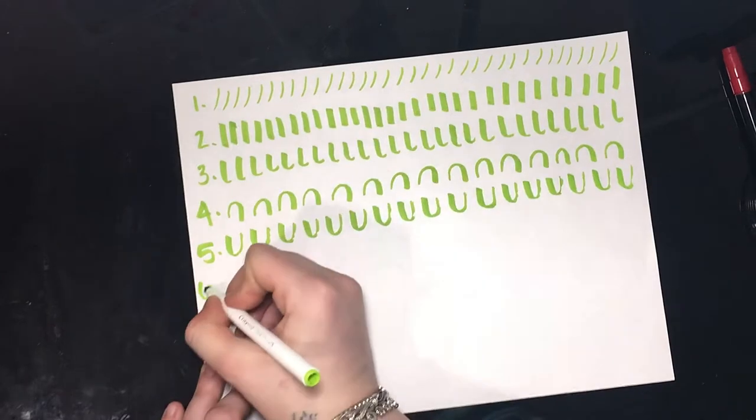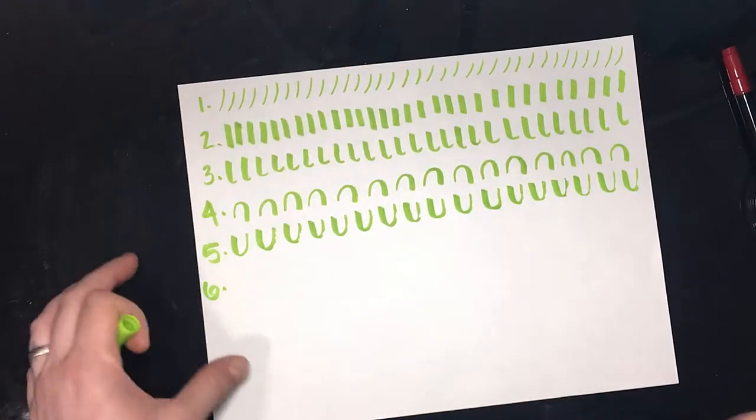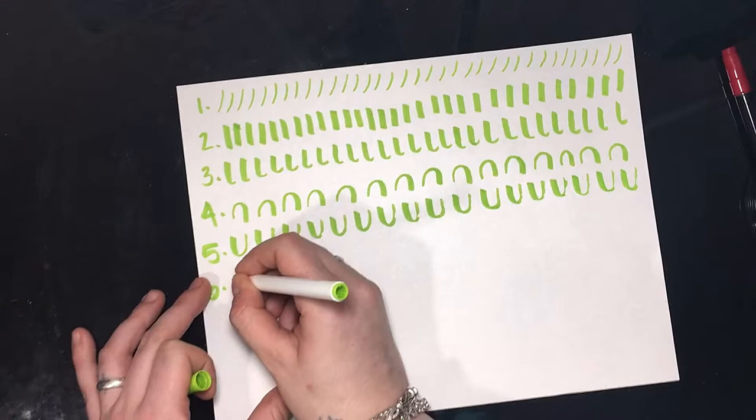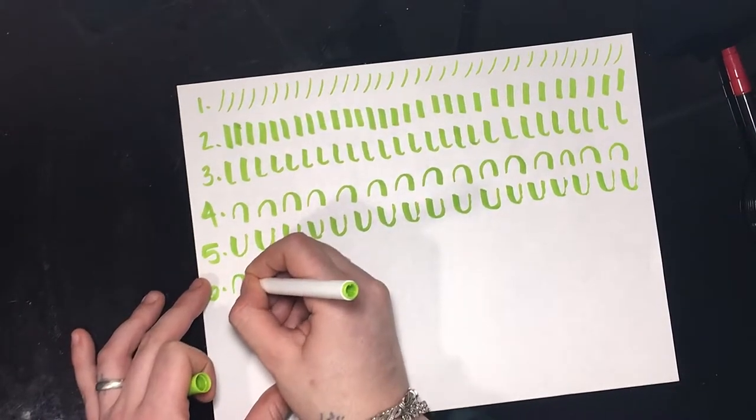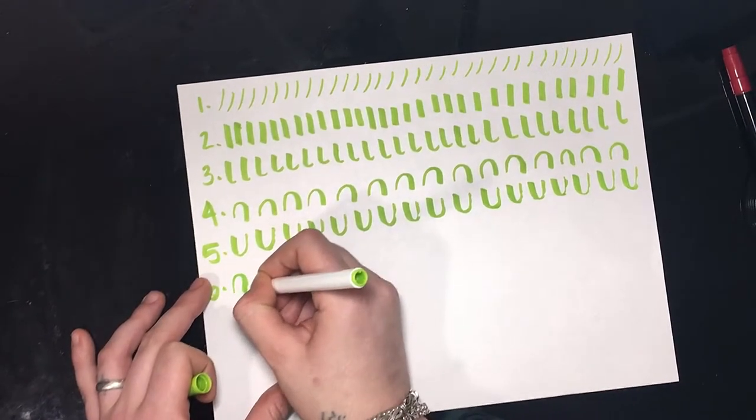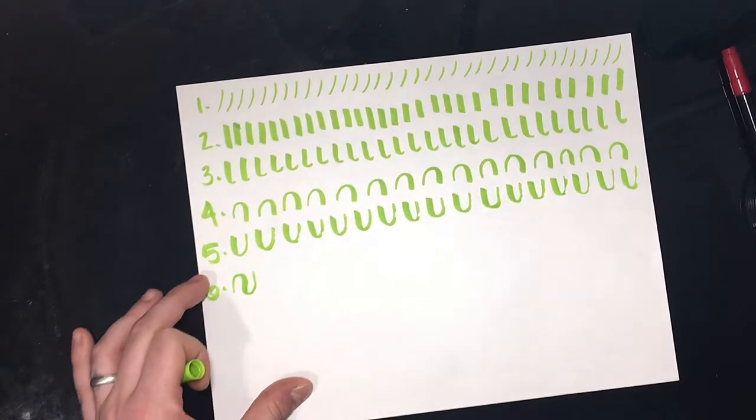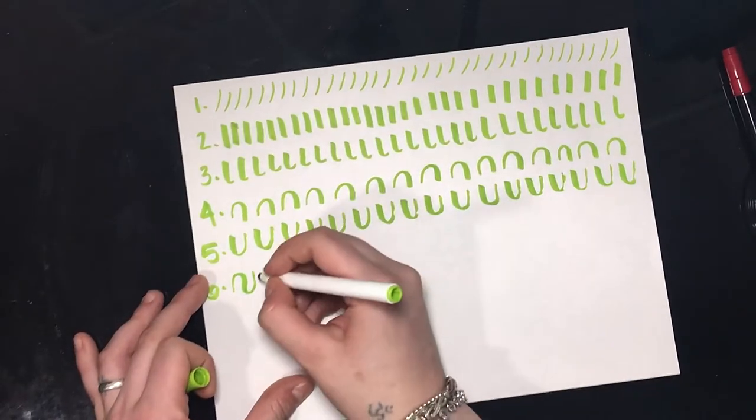Now the next thing we're going to do is we're going to put these two together. So we're going to start with the thin up stroke, the thick down stroke, and then go back to the thin up stroke. And then you're just going to do a row of those.